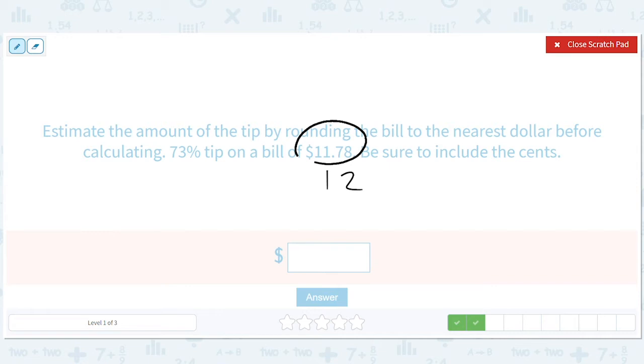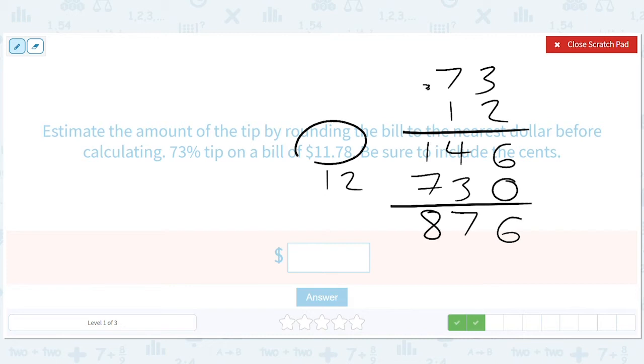And so, we have 73 times .12 gives us 6, gives us 14, gives us 3, gives us 7. 6, 7, 8. We have two decimal places. So, we have $8.76.